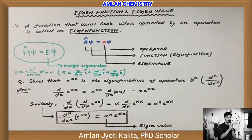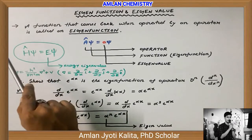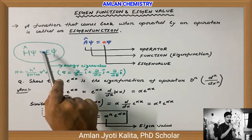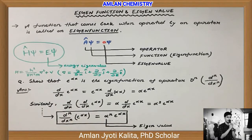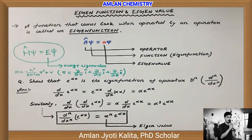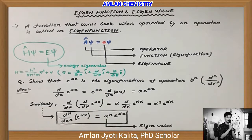Ψ ke upar agar aapne yeh energy operator yaani Hamiltonian operator apply kiya, toh aapko milega wapas wohi function, multiplied by energy value, jisko hum log energy eigenvalue bolenge. Koi bhi function jiske upar koi bhi operator operate karne ke baad agar wohi function mile multiplied by a particular constant, toh usi equation ko hum log bolenge eigenvalue equation, aur function ko bolenge eigenfunction.